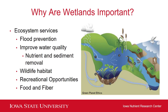I've gone over what wetlands are. Now I'm going to talk about why wetlands are important. Obviously there's the intrinsic value of wetlands — they're important because they exist. But wetlands also provide a number of ecosystem services, which are essential direct and indirect benefits that nature provides to humans. Some of the wetland ecosystem services include flood prevention, improved water quality through nutrient and sediment removal, wildlife habitat, recreational opportunities, as well as food and fiber.